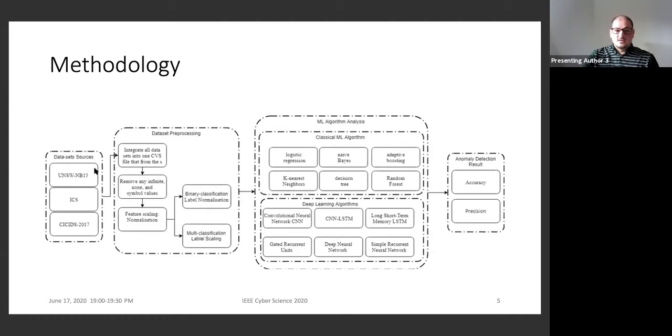The next phase is the data preprocessing in our methodology, where we integrate all files from each data set into a single CSV file, followed with removing any infinite, none and symbols values from the CSV file. The final step in the data set preprocessing phase is the feature scaling, where we normalize the label to zero or one for the binary classification and we perform label scaling for multi-class classification.